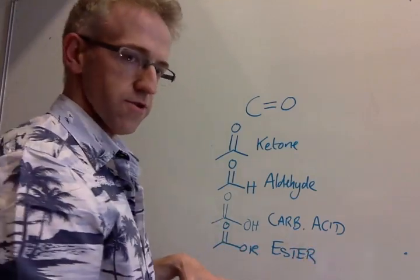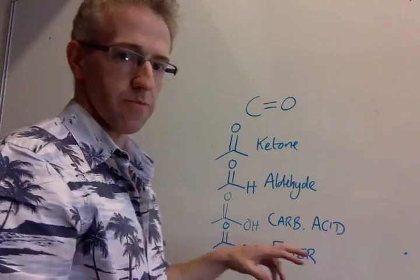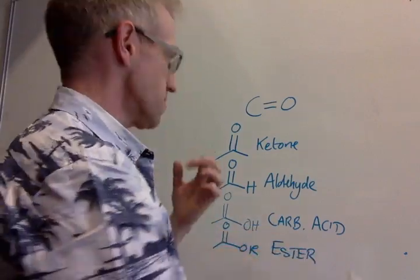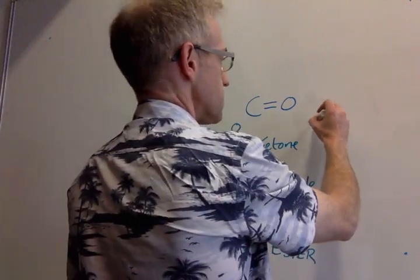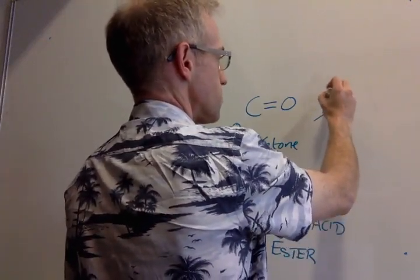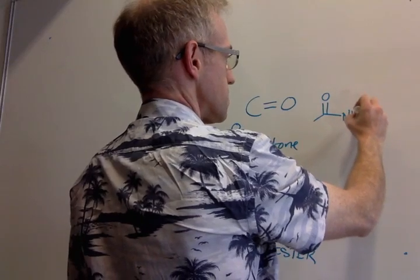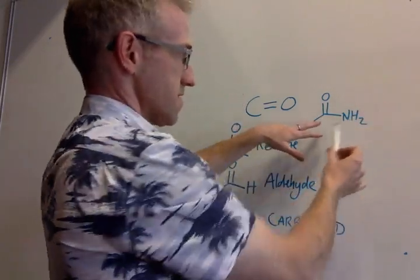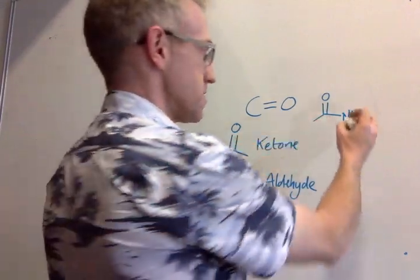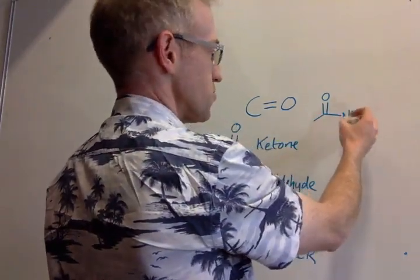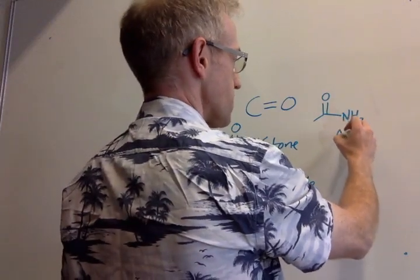These are the most common that we're going to do. There are a couple of others that we should just mention. Certainly in nature, the one that we see a lot is where the group that's joined to the carbon of the carbonyl is an NH2 or an amine group, and this becomes an amide.